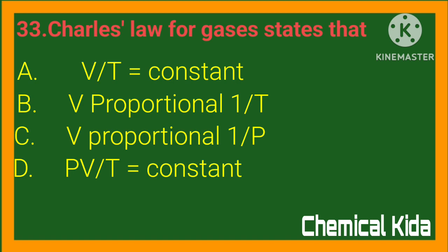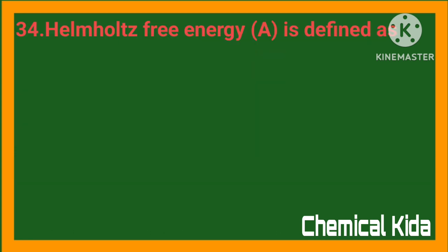Charles' law for gases states that: a) V/T = constant, b) V is proportional to 1/T, c) V is proportional to 1/P, d) PV/T = constant. Answer: a) V/T = constant.